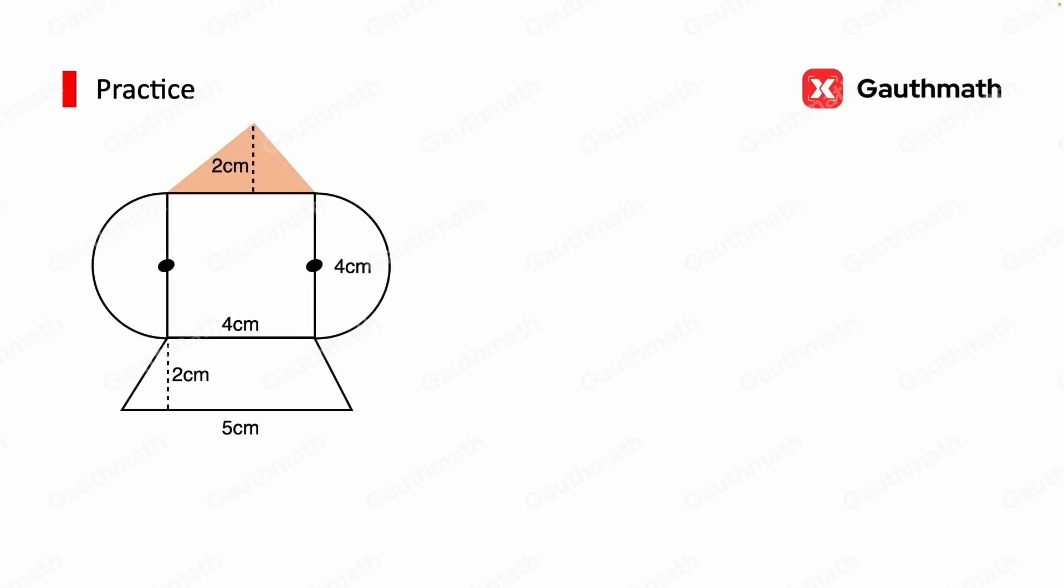First, the triangle on the top. It has a 2cm height, 4cm base. So we substitute the value into the formula of the triangle. There we go. 4 times 2 and divided by 2 equals 4cm². And the square size is 4cm. 4 times 4 equals 16cm².